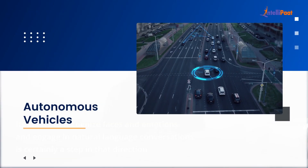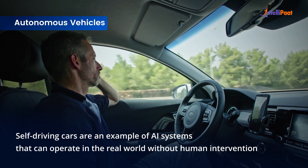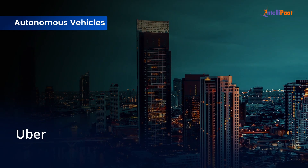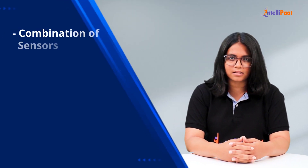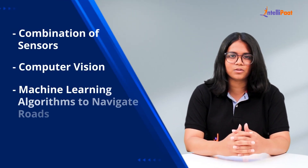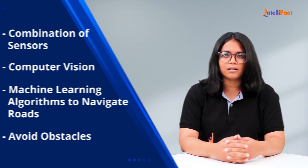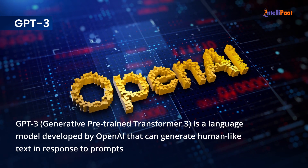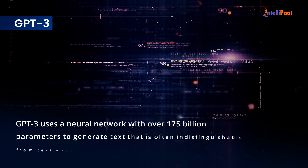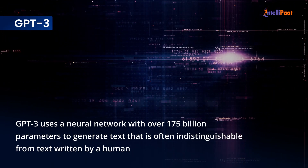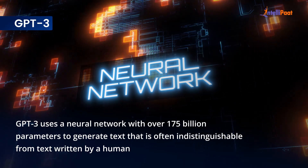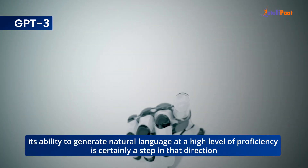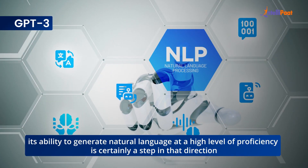Moving on to autonomous vehicles: self-driving cars are an example of AI systems that can operate in the real world without human intervention. Companies like Tesla, Waymo, and Uber are developing self-driving cars that use a combination of sensors, computer vision, and machine learning algorithms to navigate roads and avoid obstacles. Third is GPT-3: GPT-3 is a language model developed by OpenAI that can generate human-like text in response to prompts. GPT-3 uses a neural network with over 175 billion parameters to generate text that is often indistinguishable from text written by a human. While GPT-3 is not a true AGI, its ability to generate natural language at a high level of proficiency is certainly a step in that direction.